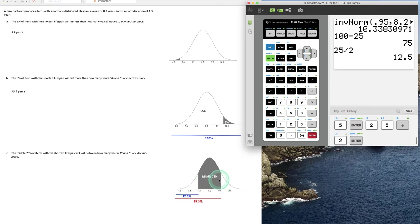So the middle set, the largest area to the left that corresponds to this x value near 9.5 is going to be 75% plus this other tail, 12.5%. This is what you'll have to calculate using this particular calculator.